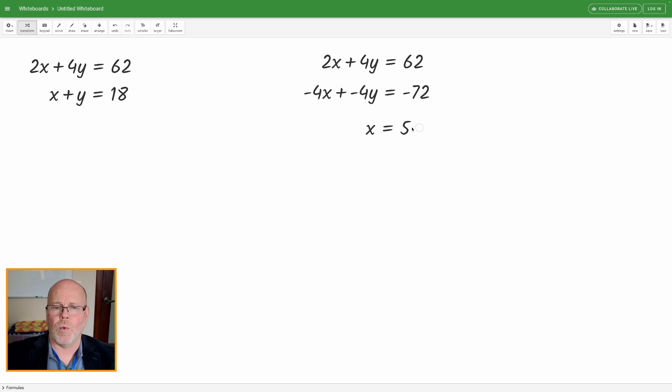So how do we get the y? We substitute it into either of these two equations. And I can actually, I have this other equation right here, the original x plus y, which got modified and became negative 4x plus negative 4y is equal to negative 72. So really, I have three different equations I could choose from.